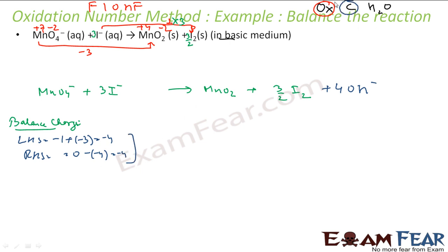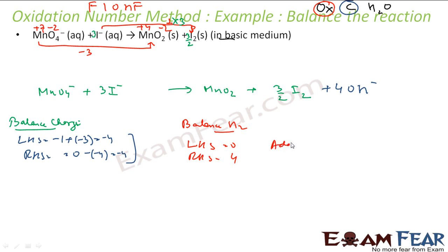Now balance hydrogen. LHS has zero hydrogens; RHS has four hydrogens from 4 OH⁻. We add 2 water molecules to the LHS, giving four hydrogens on the left. Hydrogen is now balanced.